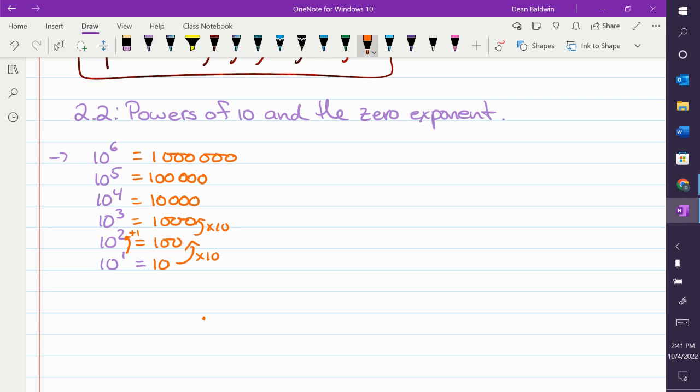I just want to point out, this 6, when you're dealing with powers of 10, represents the number, or your exponent, represents the number of 0s, correct? Correct. When you're dealing with powers of 10.